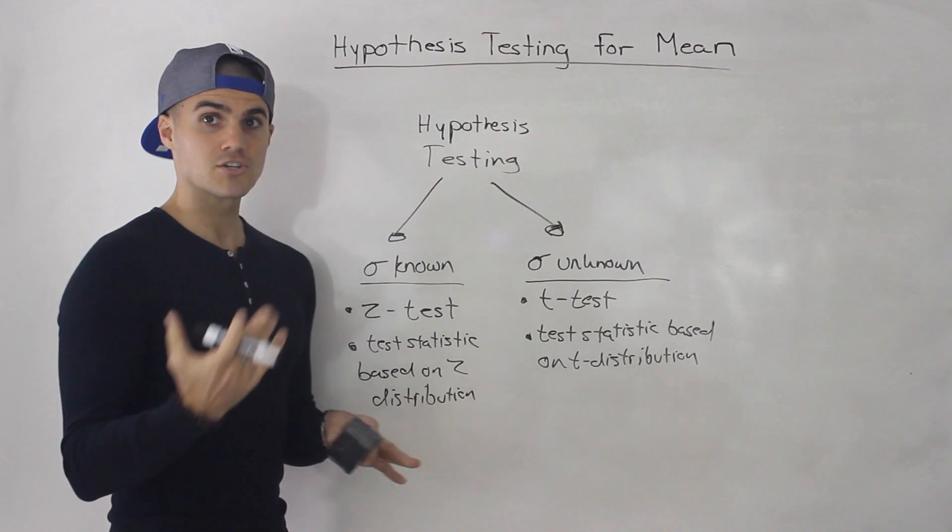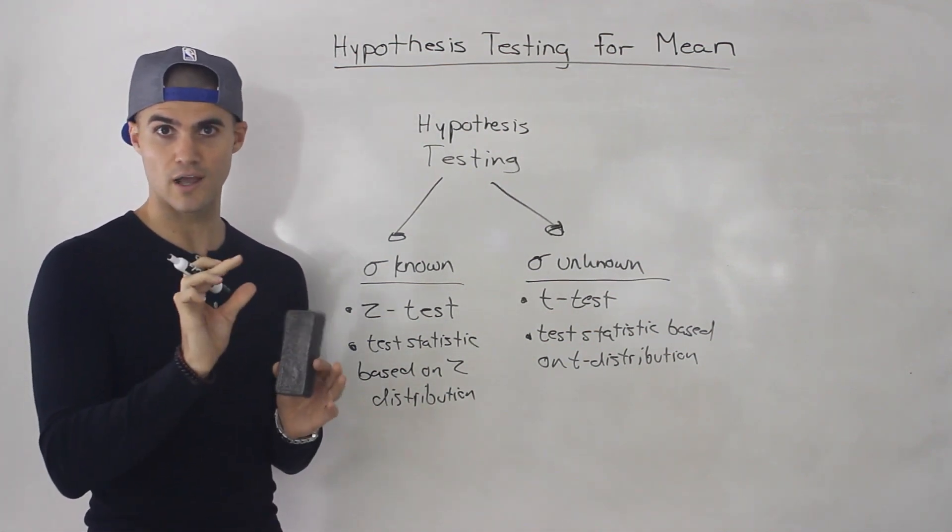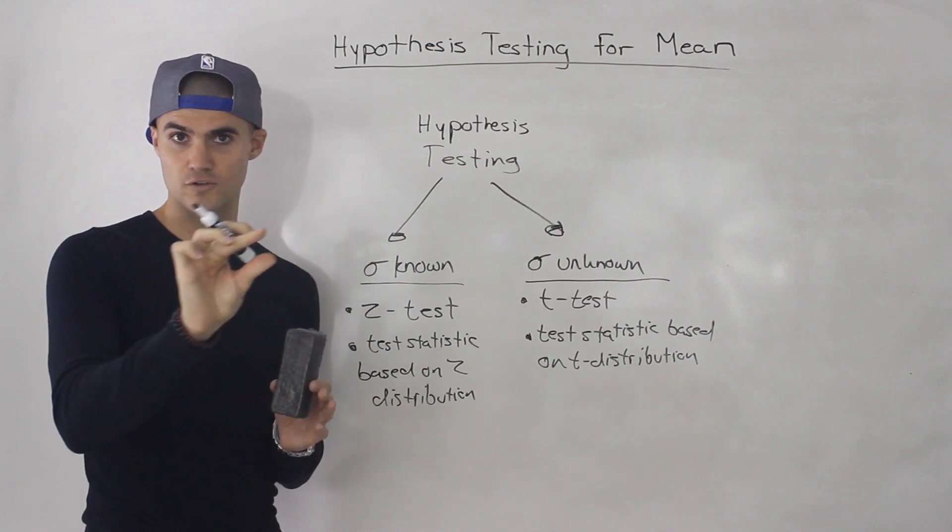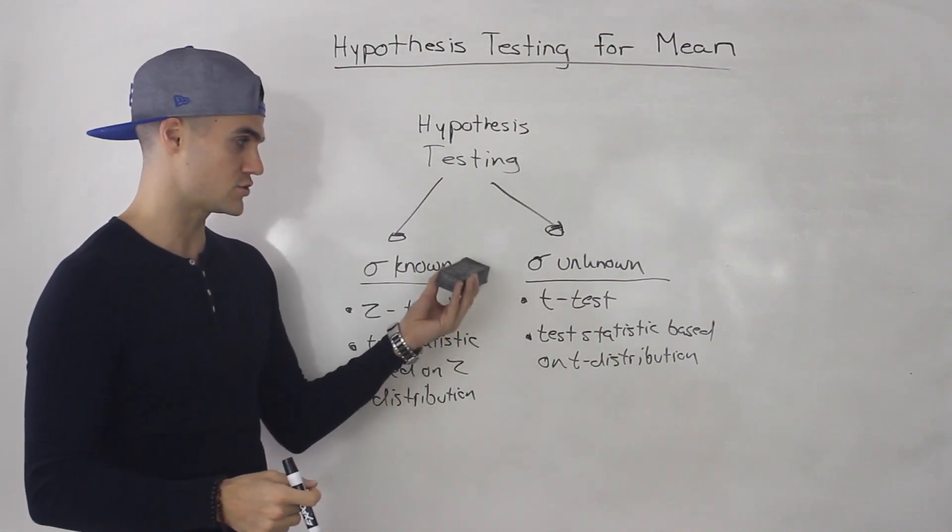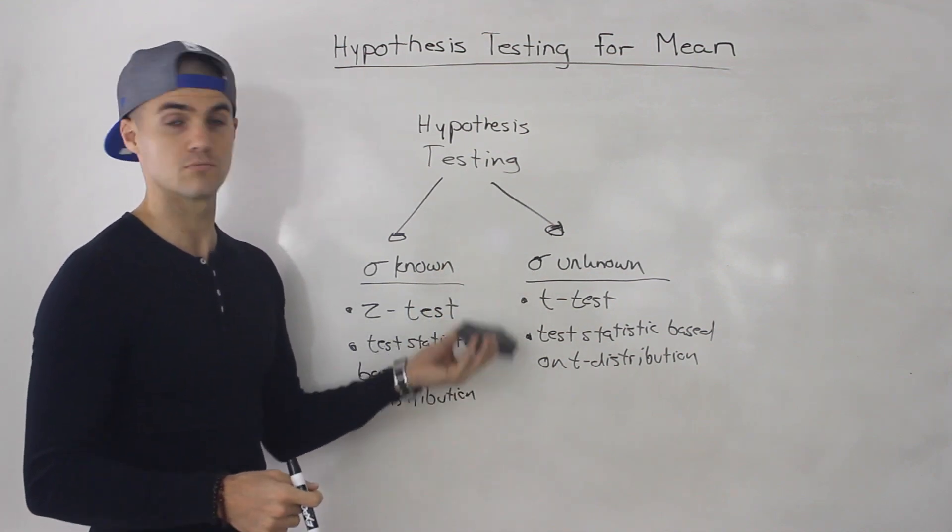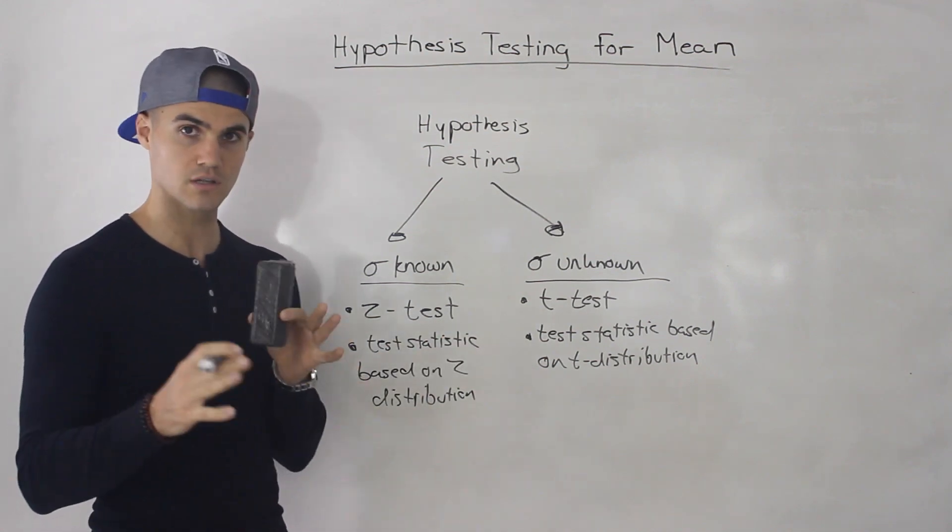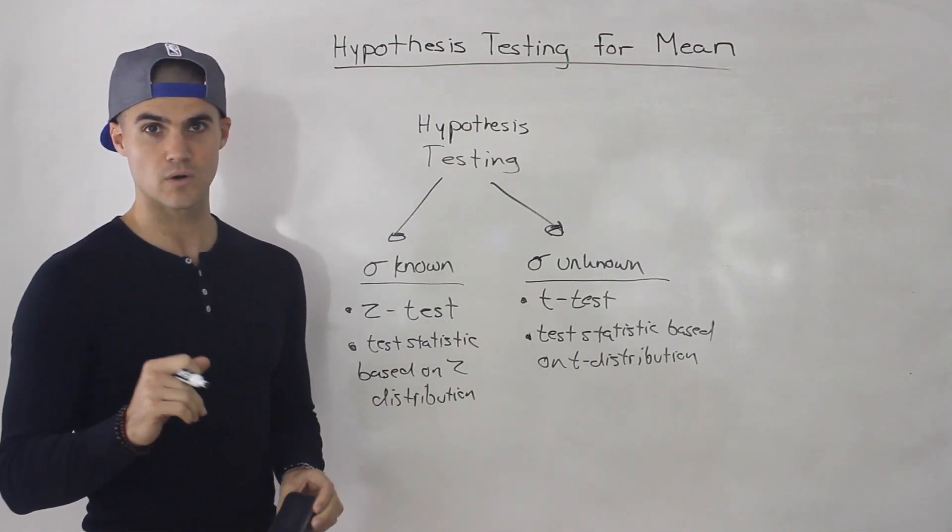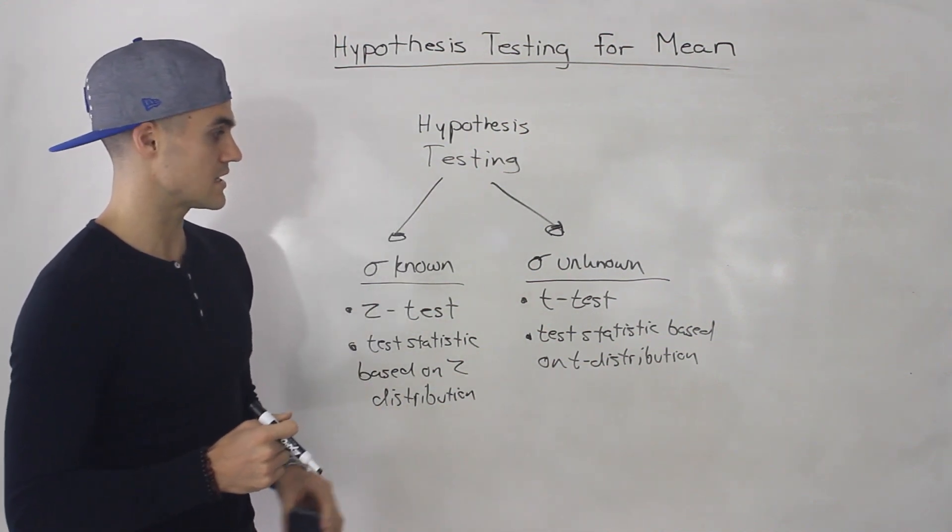Right, so there's a bunch of things to consider. From the previous video, I told you you got to look at questions, see whether it's a one tailed versus two tailed test. Well, you also got to look for this. Do you know the population standard deviation? Or do you not? Because the distribution that you're going to use is going to be different.